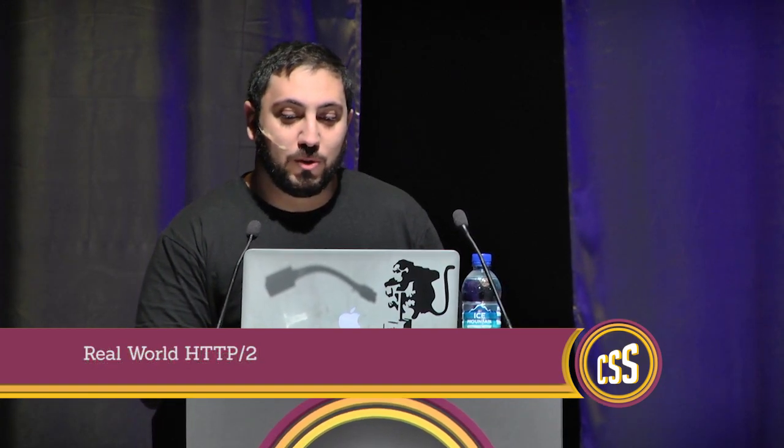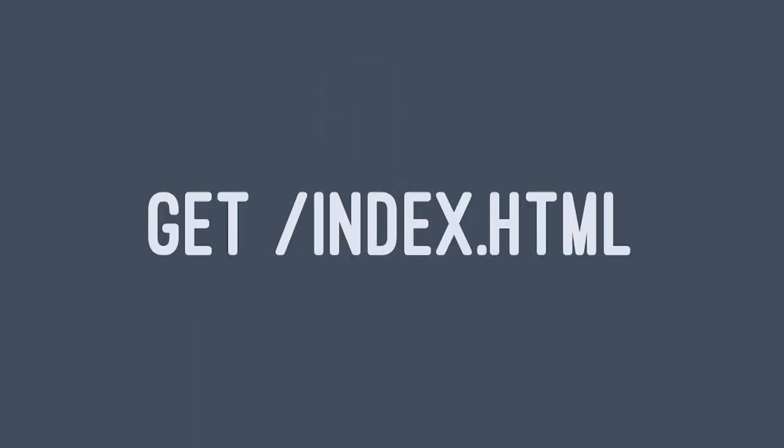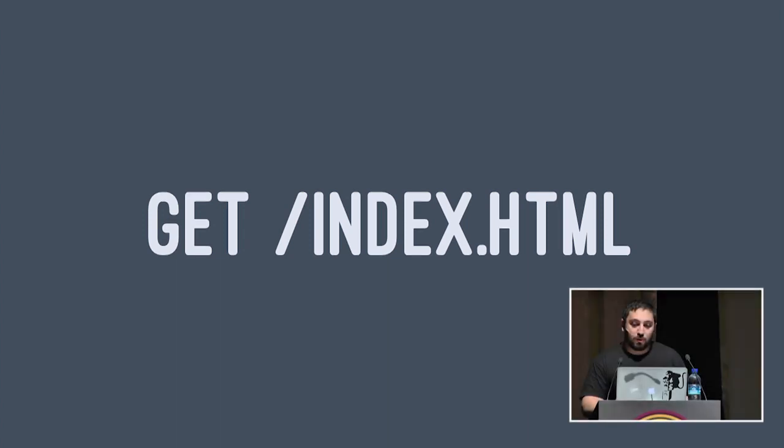In 1989, Tim Berners-Lee first proposed the World Wide Web project, and with it, he and his team at CERN invented HTTP and HTML. The first implementation had one HTTP method — GET — and every response returned an HTML page.